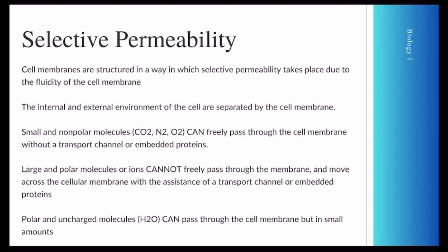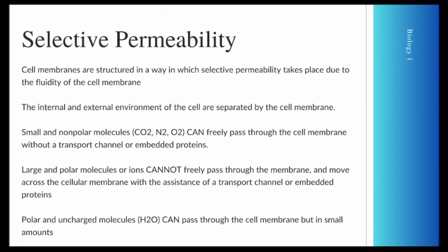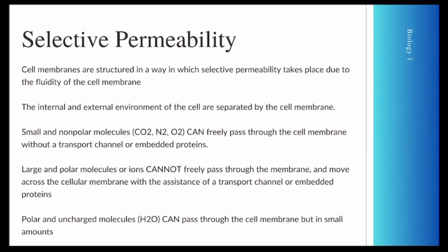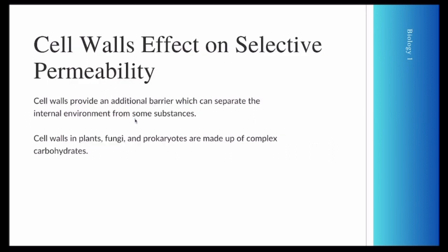Polar and uncharged molecules can pass through the membrane as well, but only in small amounts. For example, polar and uncharged molecules, such as H2O, can pass through the cell membrane, but only in small amounts. The cell wall also has an effect on permeability, as it provides an additional barrier which separates the internal environment from some substances.